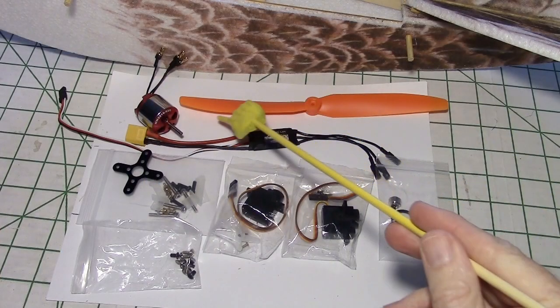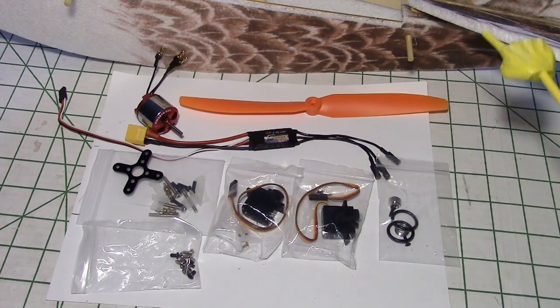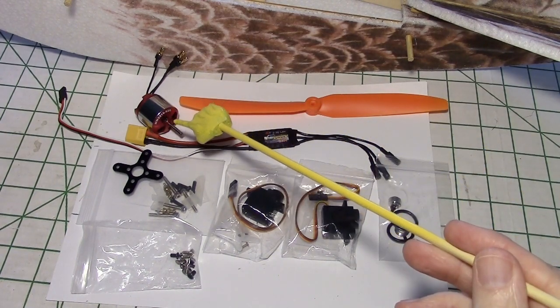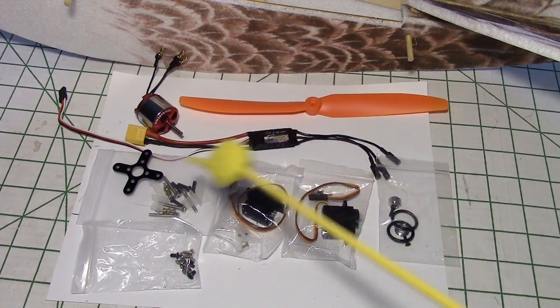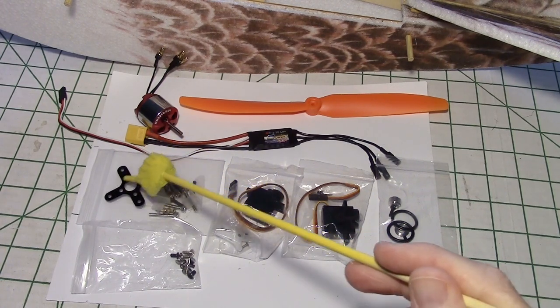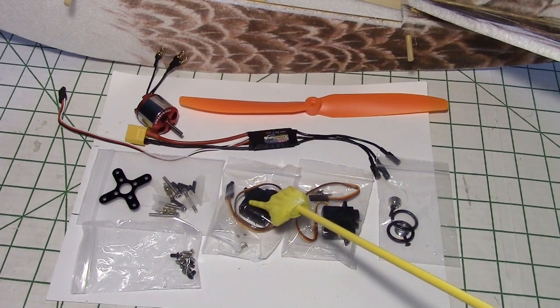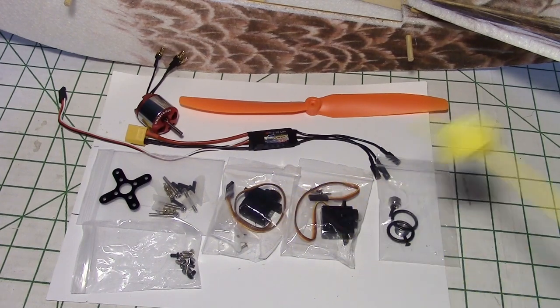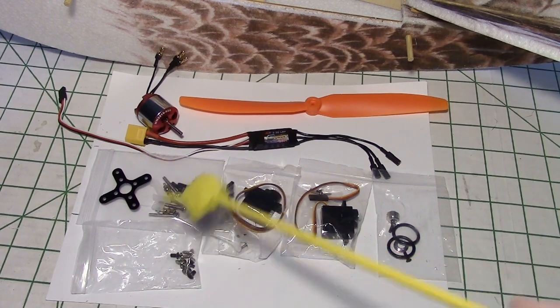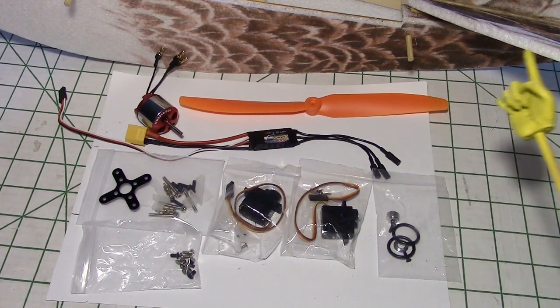So we have a 9x5 prop and that's going to be using this motor right here which is a 920 kV motor. Then we have the motor mount right here which is sort of a fiberboard mount, and we have two nondescript 9 gram servos. This is the prop saver over here and some of the nuts and screws and bolts.